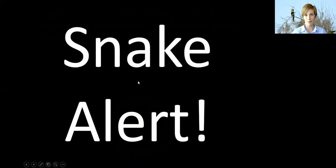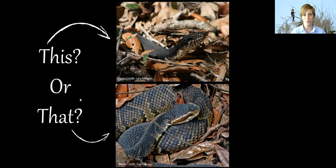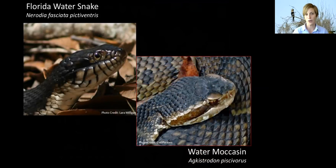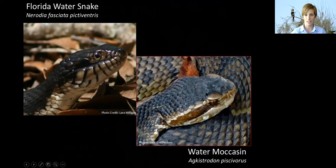Fair warning: we're going to be switching to talking about snakes. These two species were featured in our recent social media posts. On the top we have the Florida water snake, and on the bottom is the cottonmouth or water moccasin, which is one of the venomous species here in the state. To tell them apart: you've probably heard to look at the pupils — round pupils mean non-venomous and cat-eye slit pupils mean venomous. You can see the round pupils of the Florida water snake versus the slit pupil of the water moccasin.